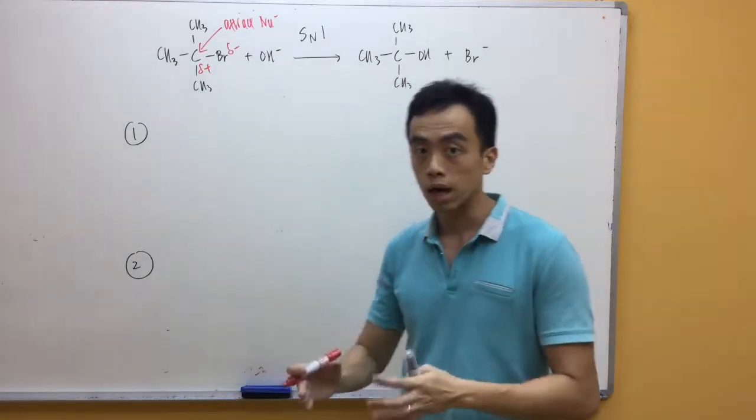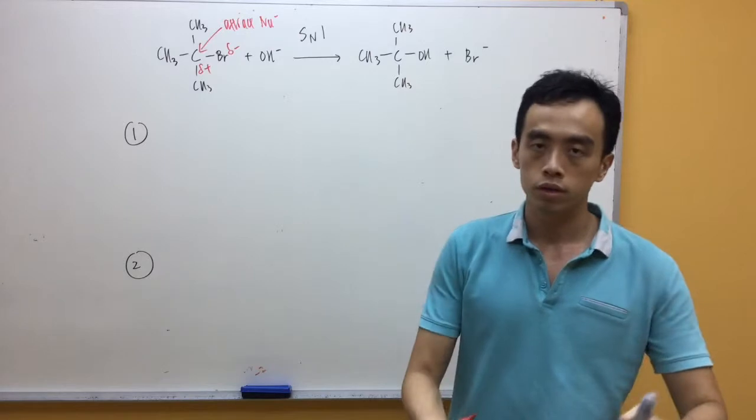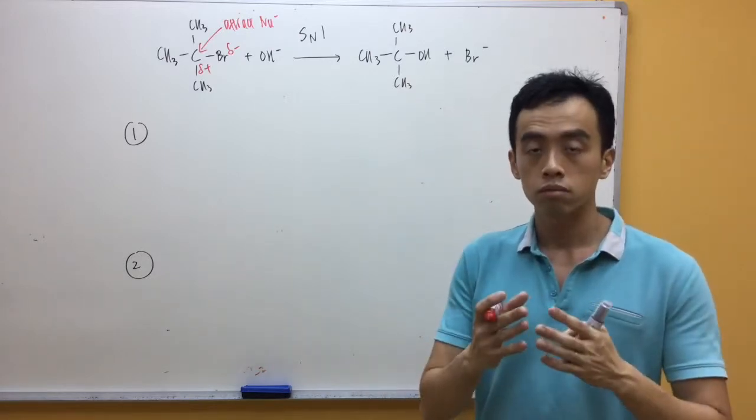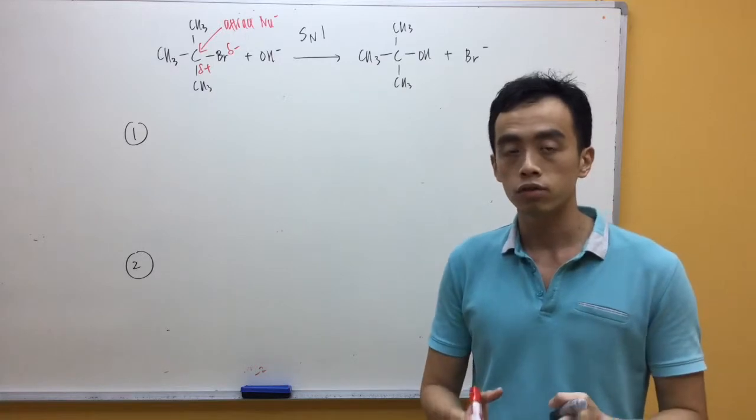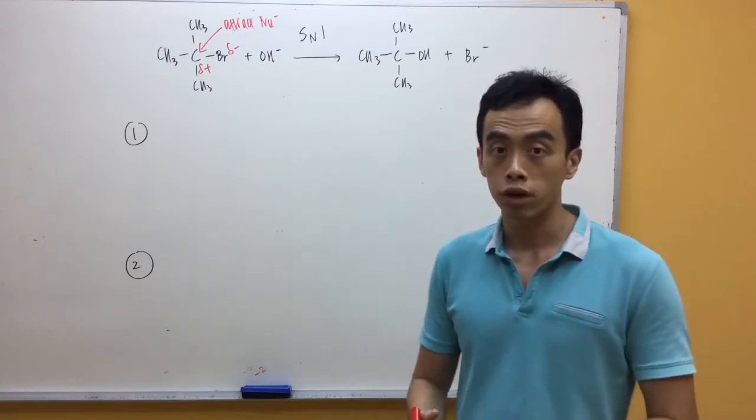Basically, my carbon, which is delta positive, attracts a nucleophile, which is negatively charged. Now, how about substitution? It's fairly simple for us to determine why halogenoalkanes undergo substitution reaction.